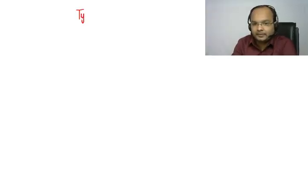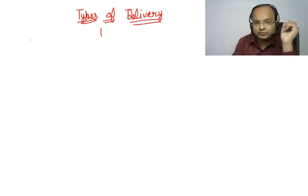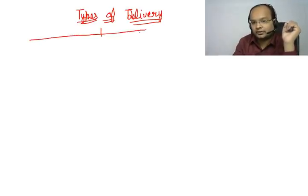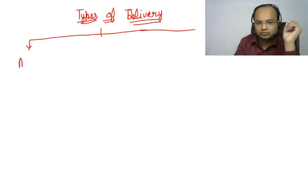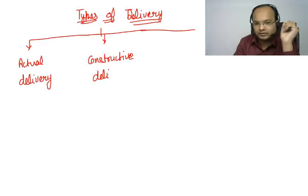Hello friends, welcome to part 3. We are going to talk about types of delivery. How many ways can it be? Let's discuss this. Under the Sale of Goods Act, there are three types of delivery. One is actual delivery, second is constructive delivery, and the third one is symbolic delivery.